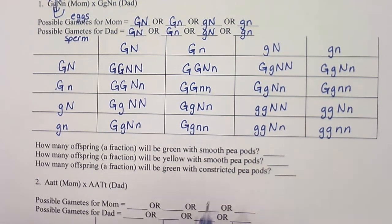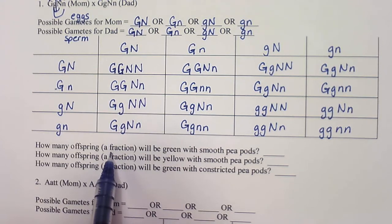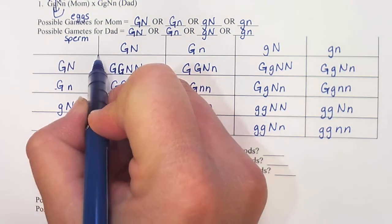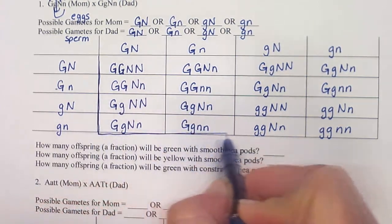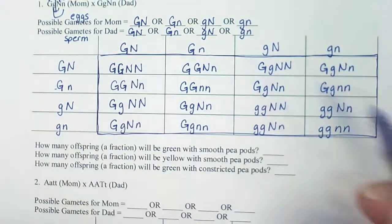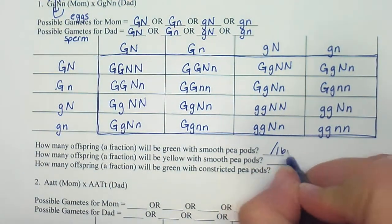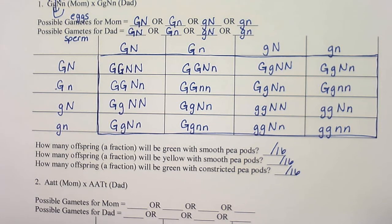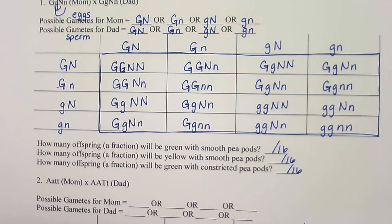Let's look at our analysis questions. Instead of asking for a percentage, I'm asking for a fraction. The total offspring in this Punnett square is 16, so all my fractions will be out of 16. I did it that way because it's hard to calculate a percent out of 16.